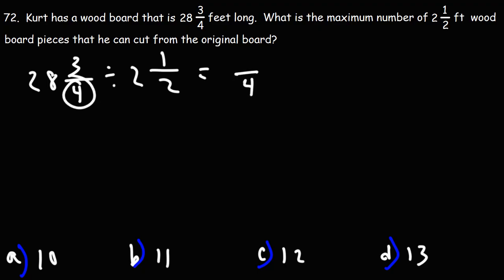So let's start with the first one. The denominator is going to stay the same. To find the numerator, we need to multiply 28 by 4, and then we're going to add 3 to that. 28 times 4 is 112, plus 3, that's 115.